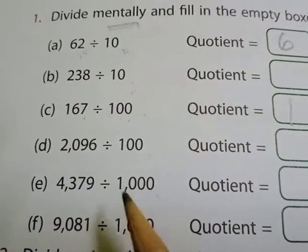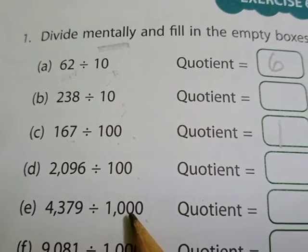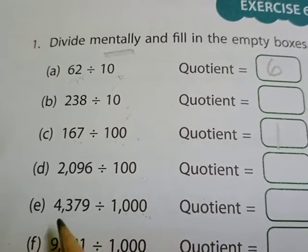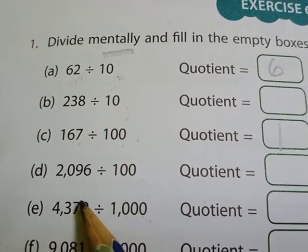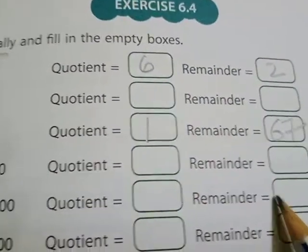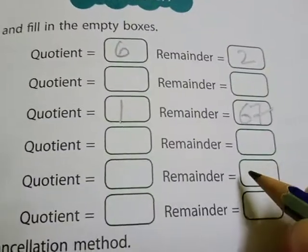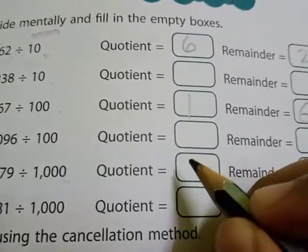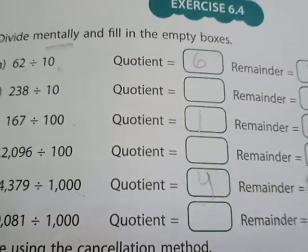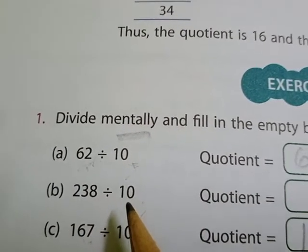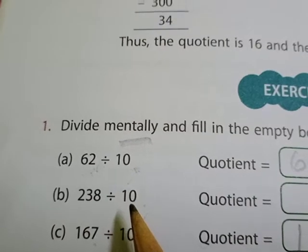If the divisor is 1000, that means three zeros. So from the dividend, from the back side, three digits will go into the remainder. For example, three, seven, nine go into the remainder, and four will be in the quotient. Now let's do the actual questions. This divisor is 10 — only one zero.